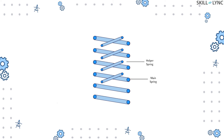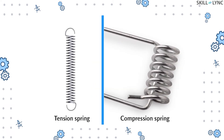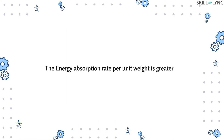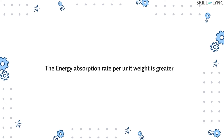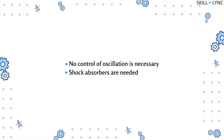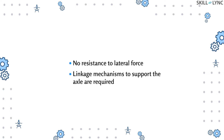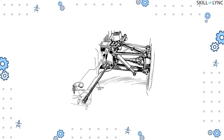Coil springs are classified into two types: tension spring and compression spring. The energy absorption rate per unit weight is greater compared to the leaf spring. Unlike leaf springs, no control of oscillation is necessary; instead, shock absorbers are needed. Finally, there is no resistance to lateral force, so linkage mechanisms such as suspension arms and lateral control rods are required to support the axle.